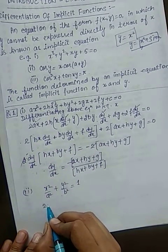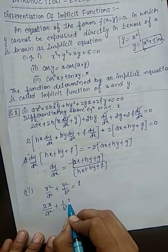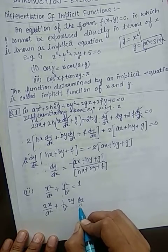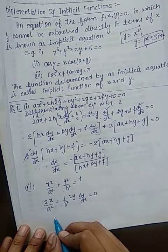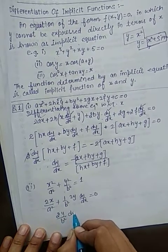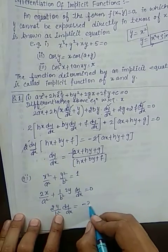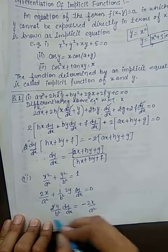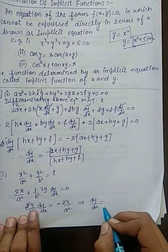Aapke paas dy/dx kitna aa chuka hai. Yahan se aapko dy/dx nikalna hai. Isko differentiate karoge, 2x/a² constant plus 1/b²·2y·dy/dx = 0. 2 common le loge, it will be 2y/b²·dy/dx = -2x/a². 2 se 2 cancel ho jayega, or you can say dy/dx = -b²x/a²y.